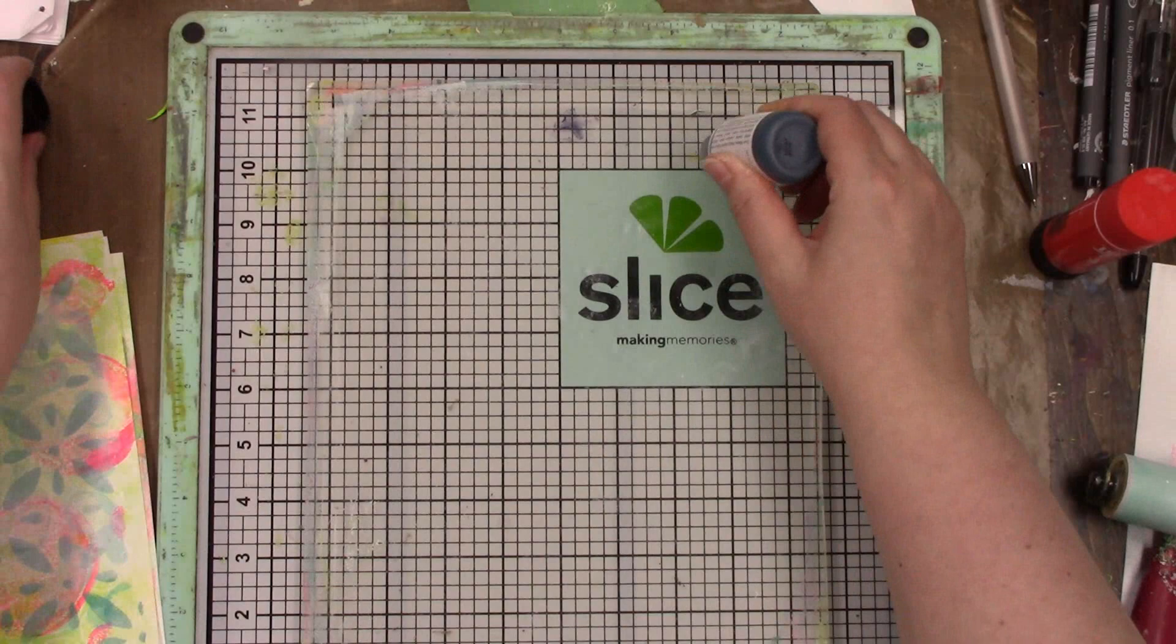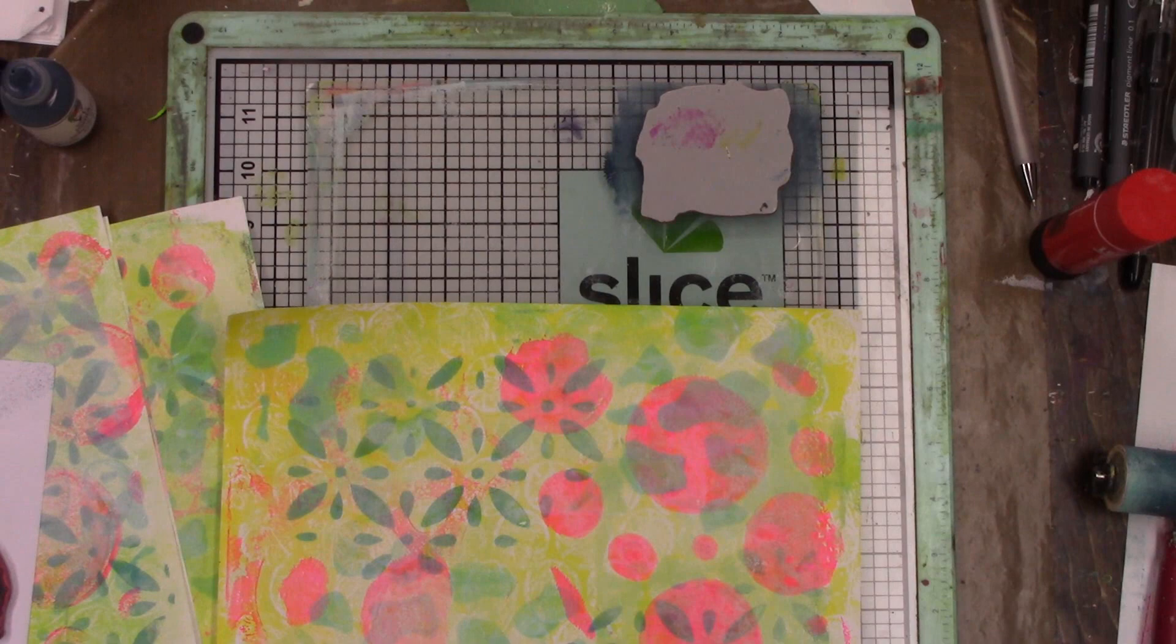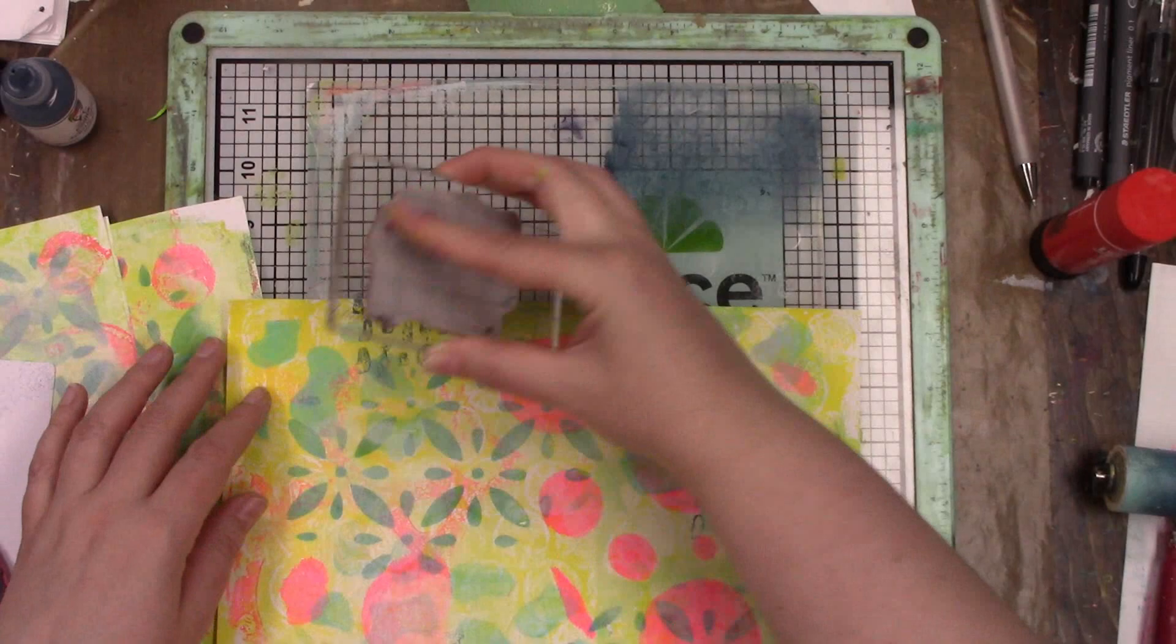Now I'm going in with some more marine Dina Wakley paint, and I'm taking one of her stamps called text and scribbles. So instead of using ink, I'm using the paint to get some stamped images down.